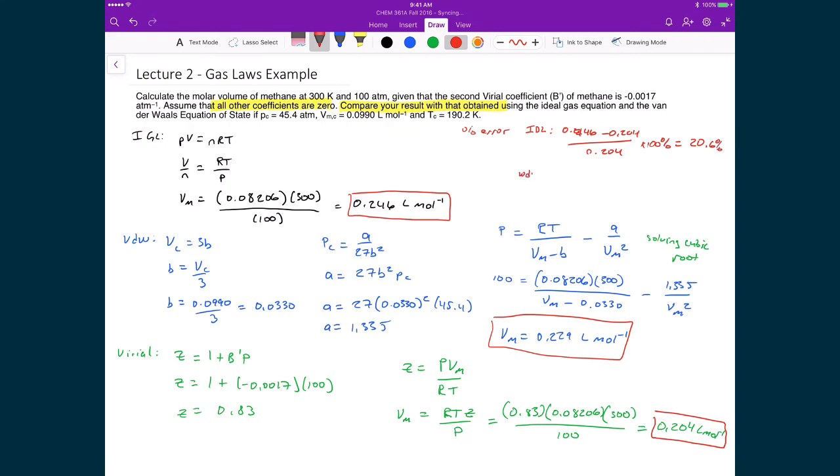And if we find out the percent error with the van der Waal equation of state, then with that we're going to write 0.229 minus 0.204 divided by 0.204. In that case, we only get a 12.3% difference. So these aren't insignificant errors. A 20.6% error and a 12.3% error. It's at least good to know or good to see that the van der Waal equation of state does do a better job at trying to quantify the molar volume of these conditions for methane than the ideal gas law, principally because it's trying to include repulsive and attractive terms in its formulation.